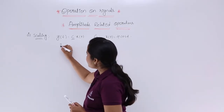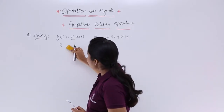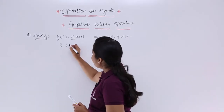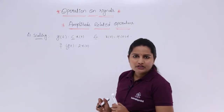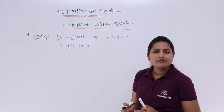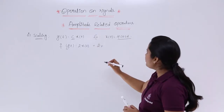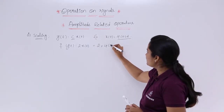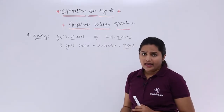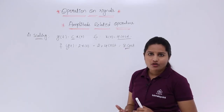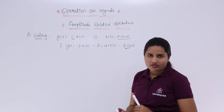To find y(t) = 2·x(t), we substitute the value of x(t): y(t) = 2 × 4cos(t) = 8cos(t). So the actual signal is 4cos(t) and the amplitude scaled version of that signal is 8cos(t).